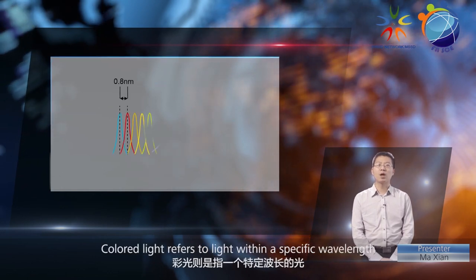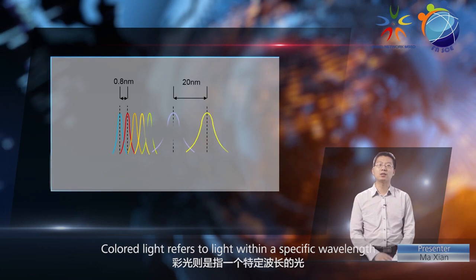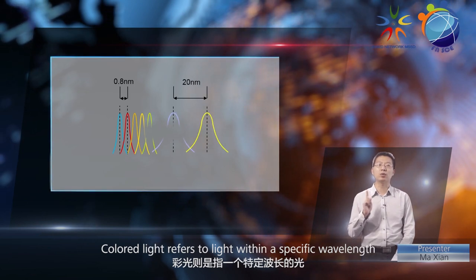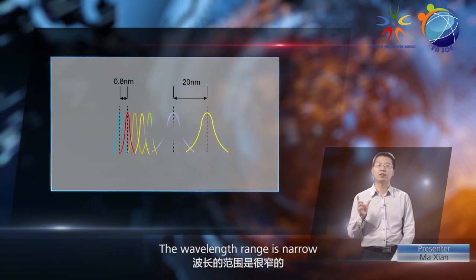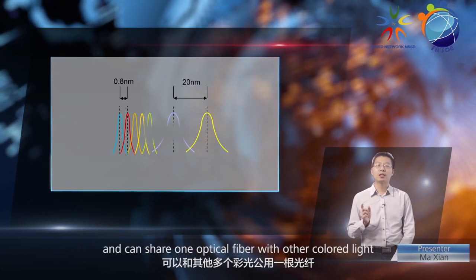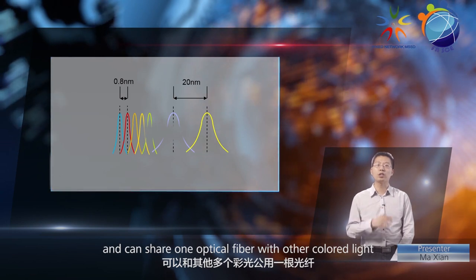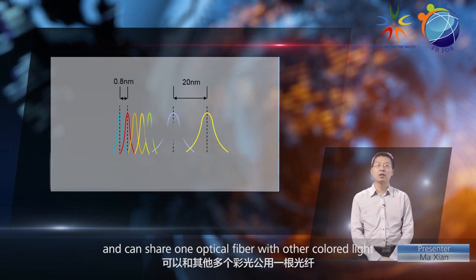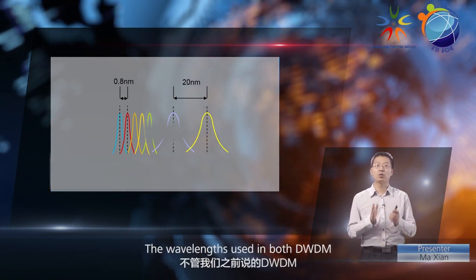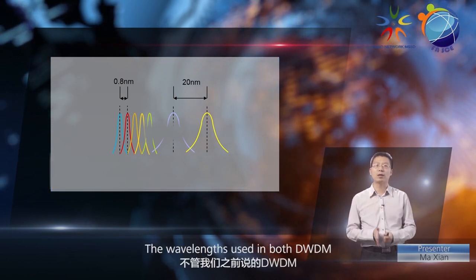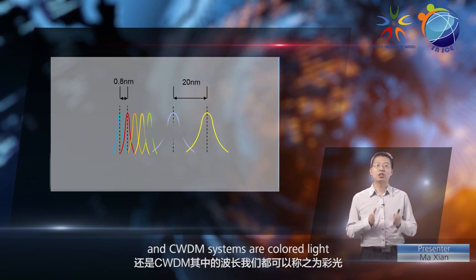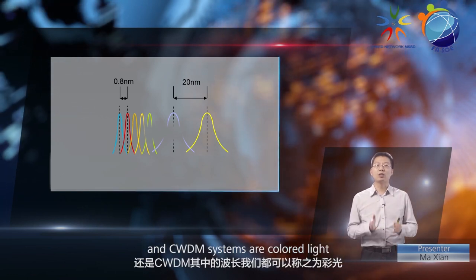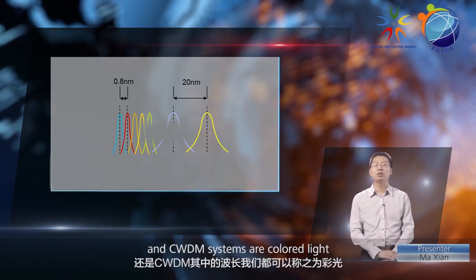Colored light refers to light within a specific wavelength. The wavelength range is narrow and can share one optical fiber with other colored light. The wavelengths used in both DWDM and CWDM systems are colored light.